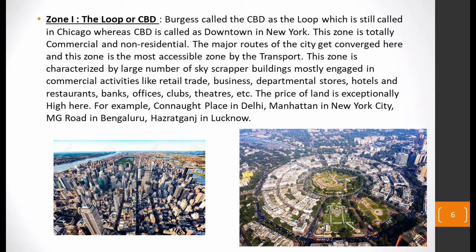Generally, the city's administrative headquarters are found in this zone. The land price here is exceptionally high. For example, in Delhi, Connaught Place is a very good example of a CBD or 'the Loop.' Similarly, Manhattan in New York City is a perfect example of a CBD. In Indian cities, examples include MG Road in Bangalore and Hazratganj in Lucknow. However, in Indian cities, more than one CBD exists — a point we will discuss further when we make a video on CBDs.